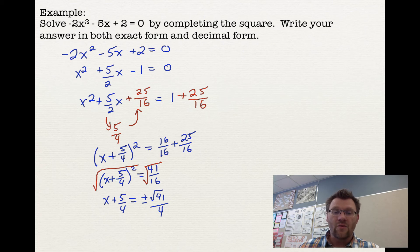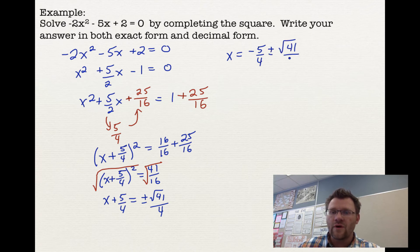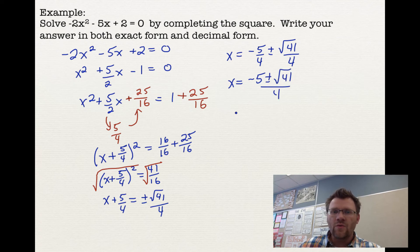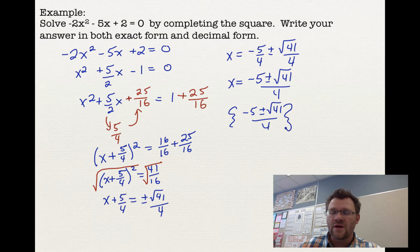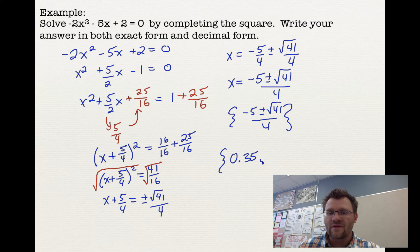To solve for x, subtract 5 over 4 from both sides, giving x equals negative 5 over 4 plus or minus root 41 over 4. It's no coincidence that the denominators match — that works out every time. So we get negative 5 plus or minus root 41 over 4. In exact form those are your two answers. In decimal form, negative 5 plus root 41 divided by 4 gives 0.35, and negative 5 minus root 41 divided by 4 gives negative 2.85.